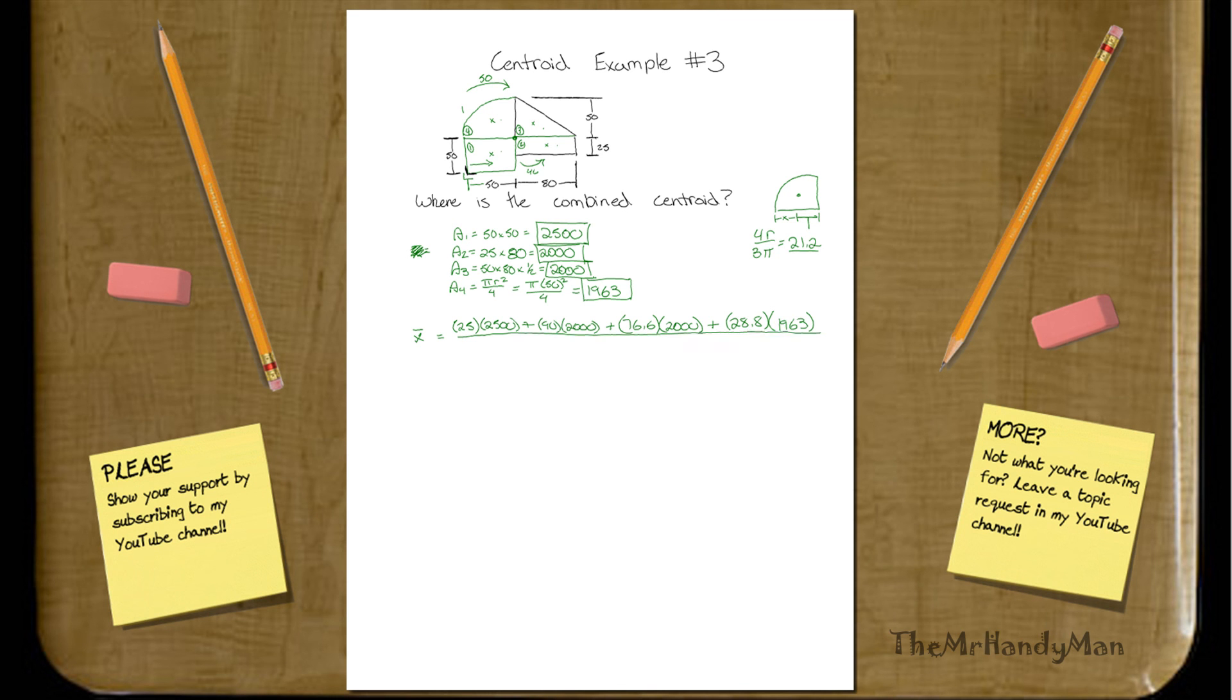All over, not that I would know. All over, the sum of all the area should be 2,500 plus 2,000 plus 2,000 plus 1,963, which is 8,463. Let's see what that comes out to. Plus 90 times 2,000, plus 76.6 times 2,000 plus 28.8 times 1963. All divided by 8,463. We have an x bar of 53.44 units, whatever that is.